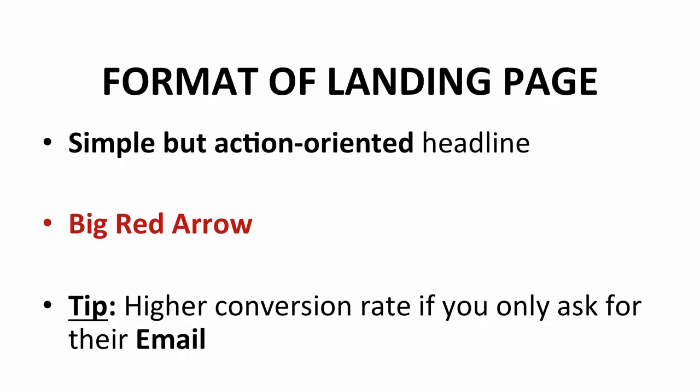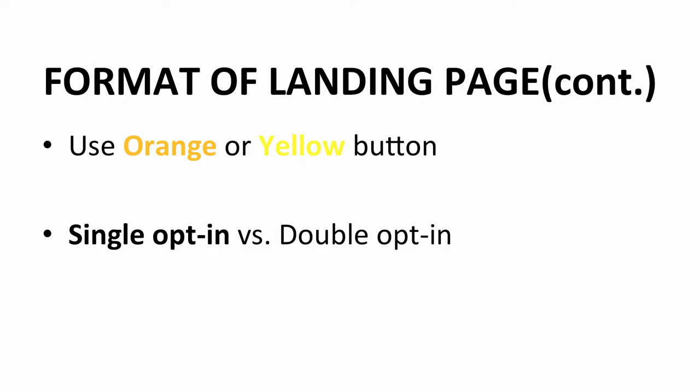After the headline, the big red arrow leads the readers to the opt-in form. It has been tested that if you only ask for their email instead of name and email, results come in at a higher conversion rate. A small reminder for the opt-in form: use an orange or yellow button. It's proven to create higher conversion rates as well. Don't use other colors. Also to increase the conversion rate, use single opt-in instead of double opt-in.